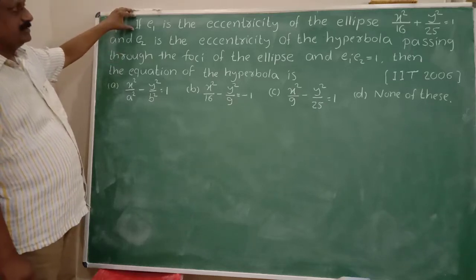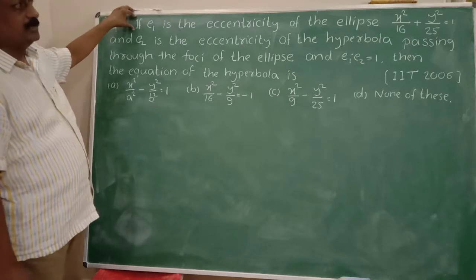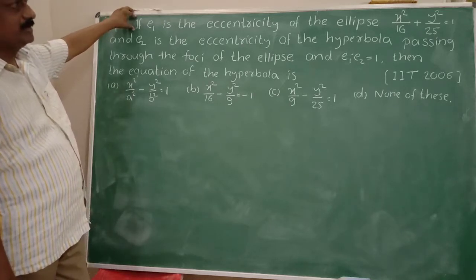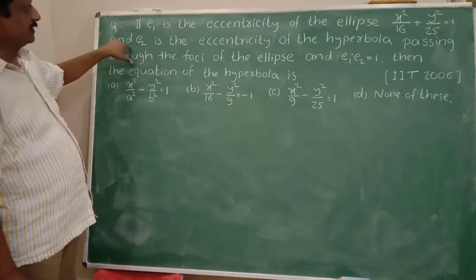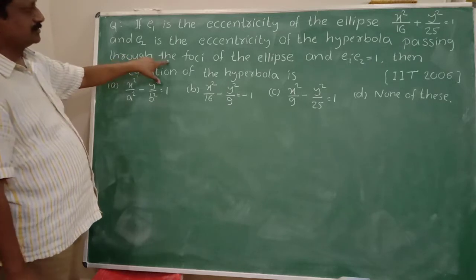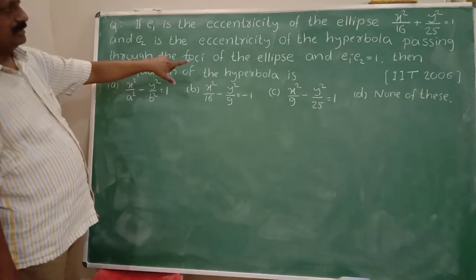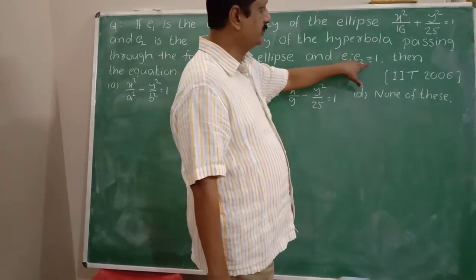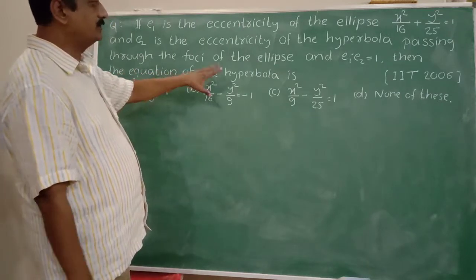If e1 is the eccentricity of the ellipse x² / 16 + y² / 25 = 1, and e2 is the eccentricity of the hyperbola passing through the foci of the ellipse, and e1 × e2 = 1, then the equation of the hyperbola is what?